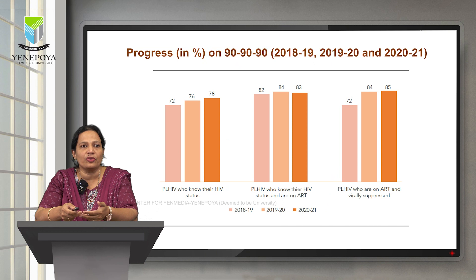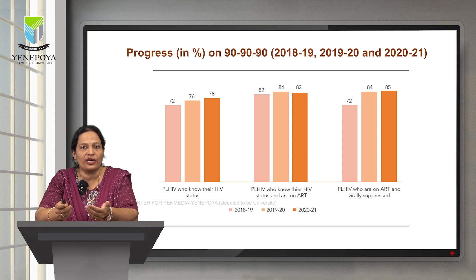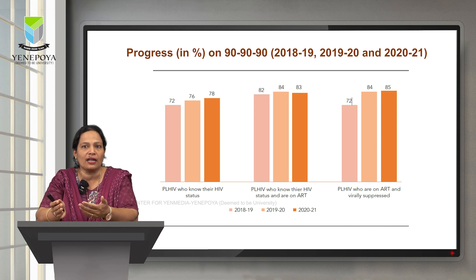Looking at the progress in percentage on the 90-90-90 targets across the years from 2018-19 to 2020-21: people who know their HIV status increased from 72% to 76% and then 78% in 2020-21. People living with HIV who know their status and are on ART increased from 82% to 84%, but there is a dip from 84% to 83% in 2020-21. There is also not a higher increase in coverage of people living with HIV AIDS who are on ART and virally suppressed. The assumption is this dip could be because of the onset of the COVID pandemic in the year 2020.